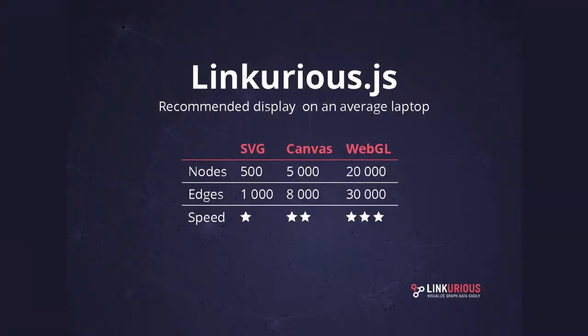Linkurious.js is built on all three technologies — you can swap between them according to your needs. What you can do with SVG is display around 500 nodes, whereas with WebGL it's around 20,000 nodes, so that's quite a big difference. But with WebGL you can do fewer things about interacting with the data — things like dragging multiple nodes are possible, but developing those plugins is much more costly than with Canvas or SVG.